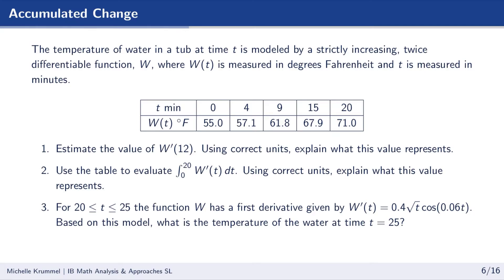For our next example, we have the temperature of water in a tub at time t, modeled by a strictly increasing twice differentiable function. That gives us information we wouldn't otherwise know from a table. The temperature is strictly increasing, meaning the derivative is positive. It's twice differentiable, meaning both the derivative of w of t and the second derivative exist for all values of t.